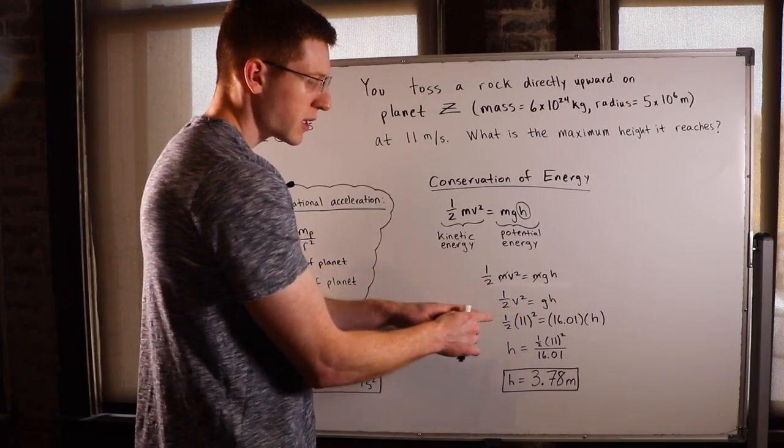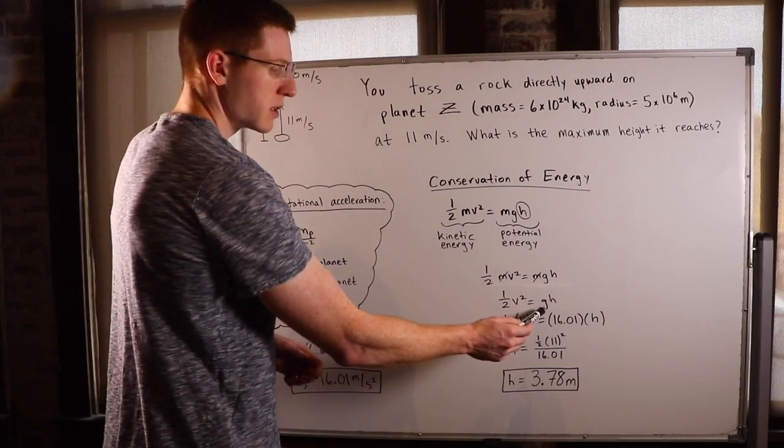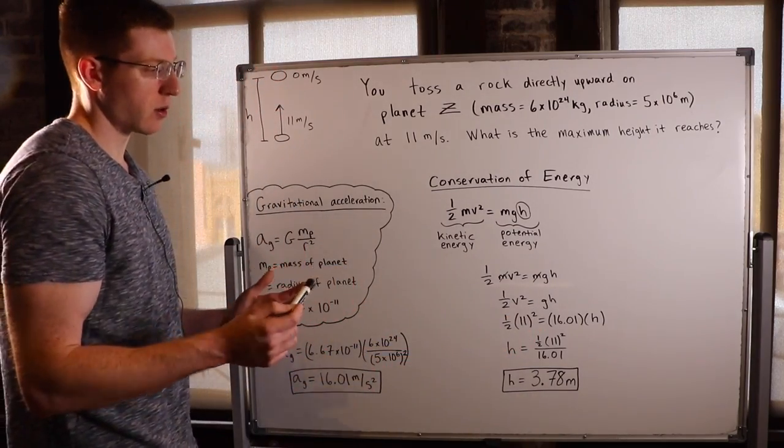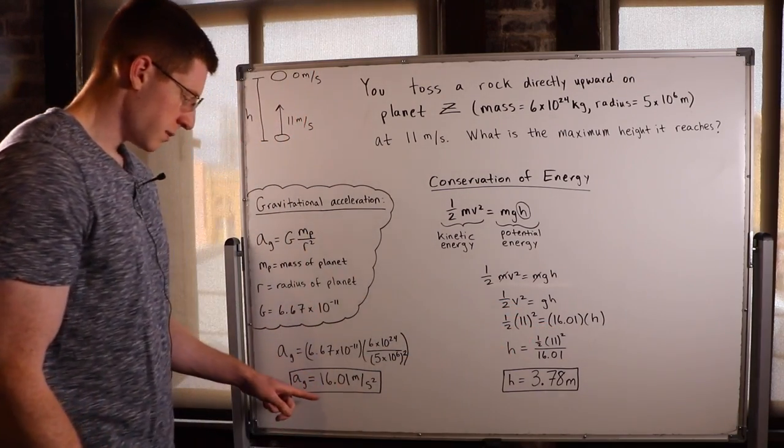So now we're left with 1 half velocity squared equals gH, or the gravitational acceleration times the height that this rock is going to go. So 11 was our velocity, so I plugged that in. We have our g now at 16.01.